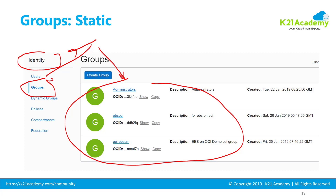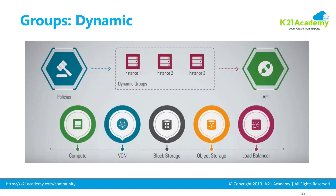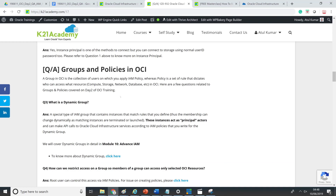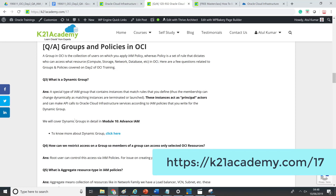It's important to understand policies — in my view one of the most critical topics, along with compartments. Within groups, you have static groups and also dynamic groups, where a dynamic group is a collection of instances — that is, Linux or Windows compute — that you create on OCI and put into a group using rules. You then apply policies on these dynamic groups, granting access to OCI APIs, the REST-based APIs exposed in OCI. Show notes with more details on dynamic groups are at k2nacademy.com/17.